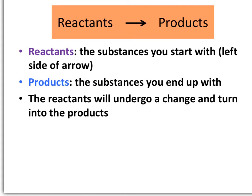In every case we're going to look at, we're going to look at what we call the reactants yielding the products in a chemical reaction. The reactants are the substances that you start with, which will always be on the left side of the arrow. The products are the substances that you end up with, and they're always going to be on the right side of the arrow.